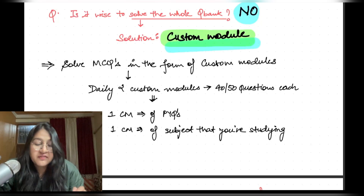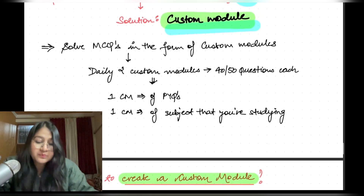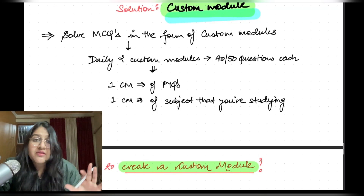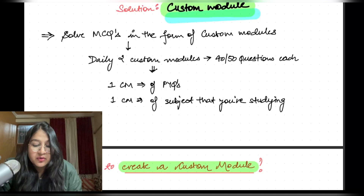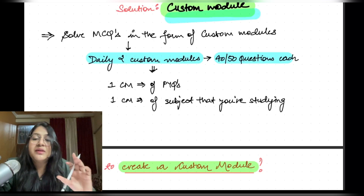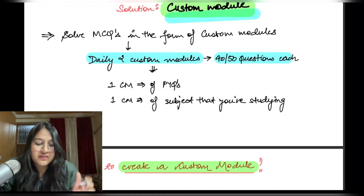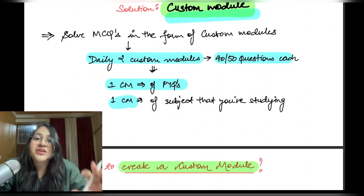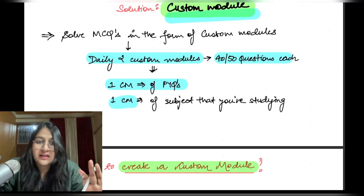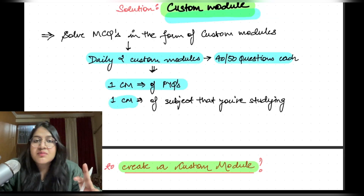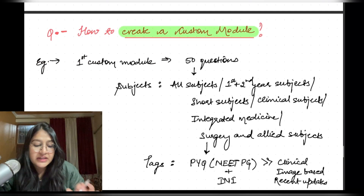If you're not doing the whole Q bank, the solution is the custom module. You are going to solve custom modules daily — two custom modules of 40 to 50 questions each. One custom module will be of all previous year questions across all subjects, a mixed-pack module. Another custom module will be of the subject you are specifically studying on that day. For example, if I'm studying Obs-Gynae, I'll do one mixed module and one Obs-Gynae module.